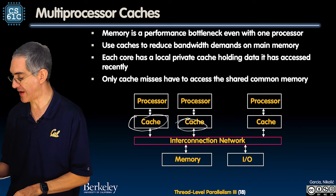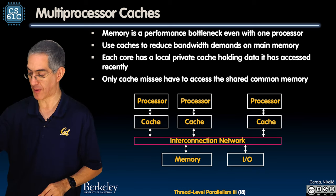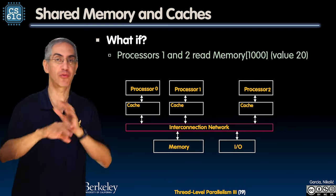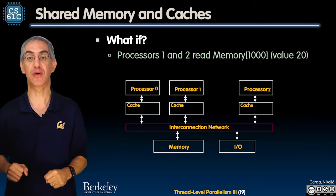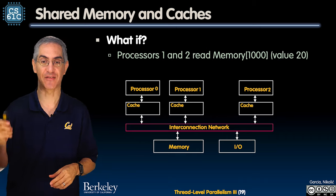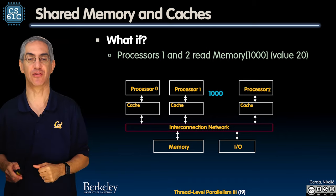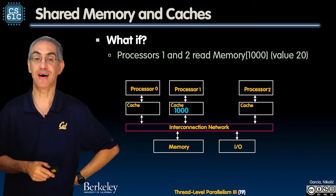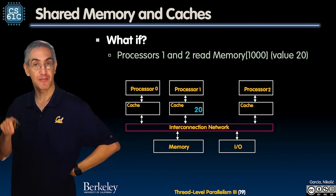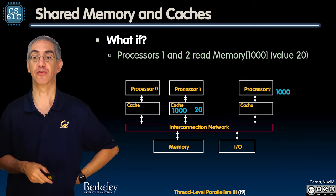Everybody has their own cache - maybe L1 and L2 - and they all have to go through the interconnect to get to shared memory. Now let's do a simple case: processor one and two just read memory location 1000, wanting the value 20. Processor one checks the cache - not there - goes to memory, grabs it, the value is 20, comes back and puts it in cache. At address 1000 we've got 20, and we're good.